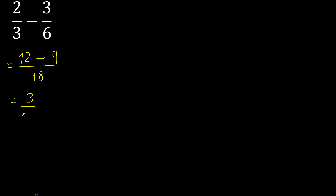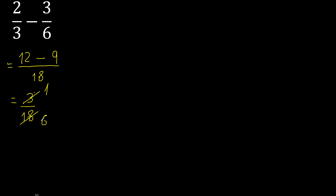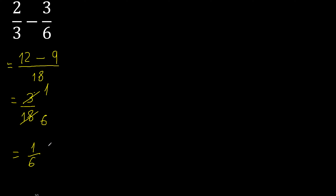3/18 can be simplified because both can be divided by the same number — divided by 3. 3 divided by 3 is 1, and 18 divided by 3 is 6. It cannot be divided further by the same number, therefore we are finished.